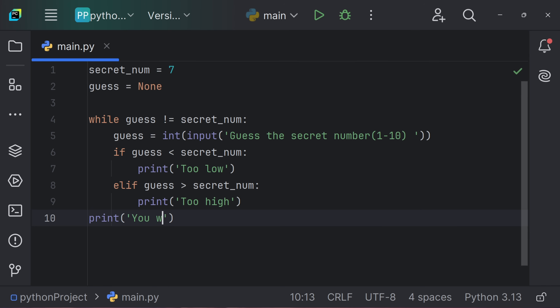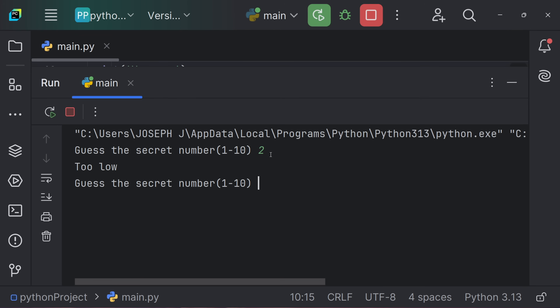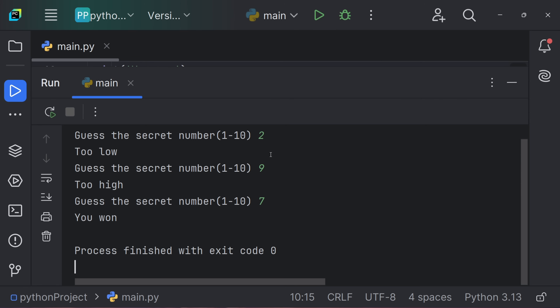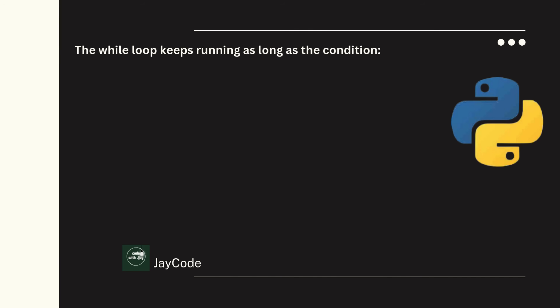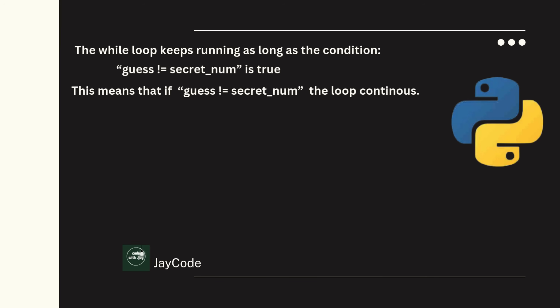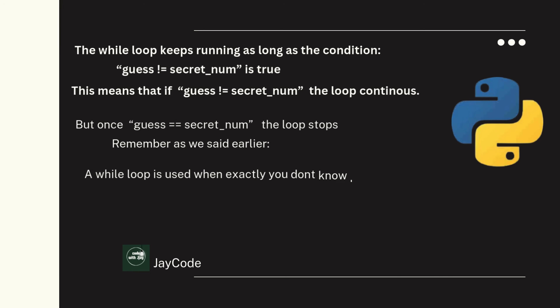Let's run the code. Guess the secret number: two — too low. Guess again: nine — too high. Guess again: seven — you won! The while loop keeps running as long as the condition 'guess != secret_number' is true. Once the guess equals the secret number, the loop stops. This is a while loop — used when you don't know exactly how many times something needs to happen.